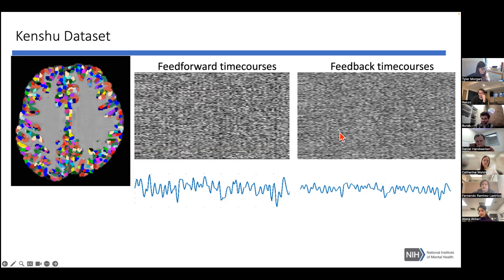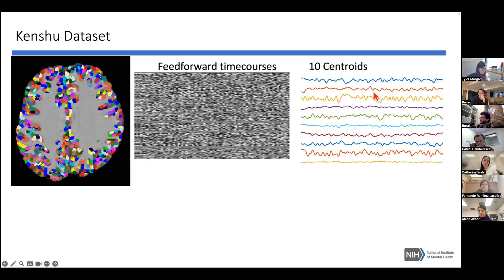One can also do k-means on this, and you get centroids identifying the main drivers of the feed-forward regressors in the brain. This is movie watching data with 10 centroids.